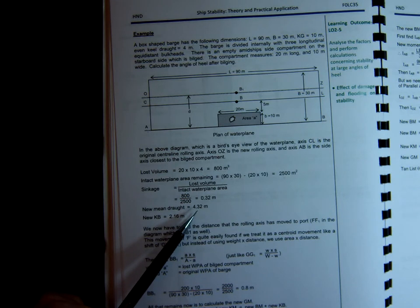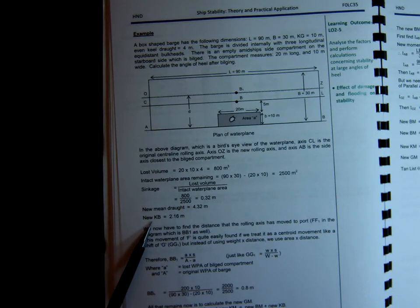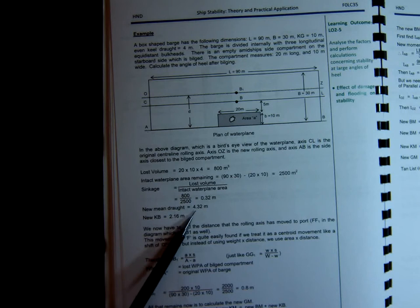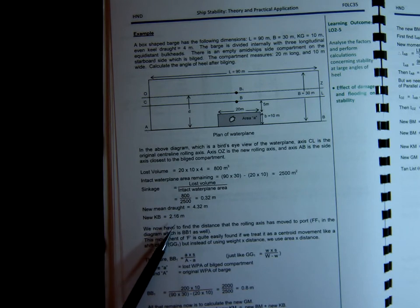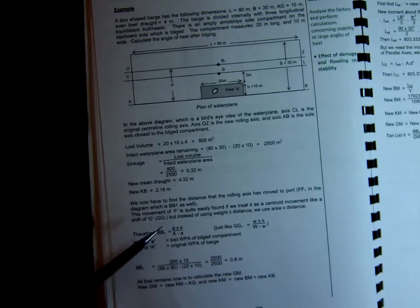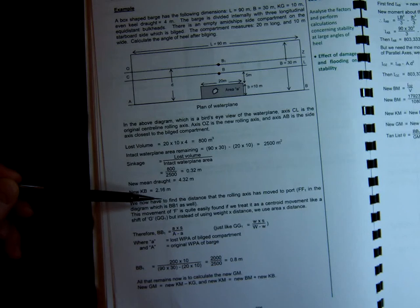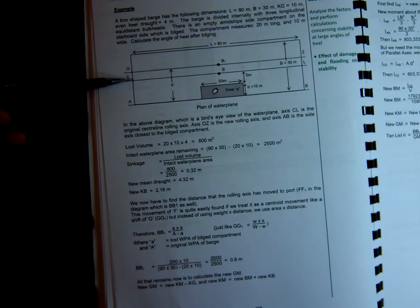We need that because we need to calculate the KM to get the new GM of the vessel. Because don't forget that the KG doesn't change. So the new KB is going to be simply half the new mean draft, which is 2.16. So that's straightforward. We now have to find the distance that this rolling axis has moved to port. The distance that it's moved from here to here.